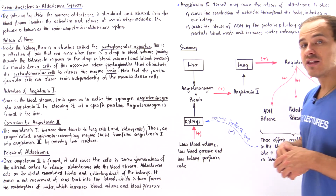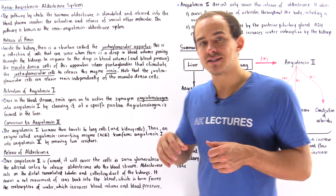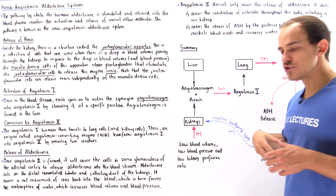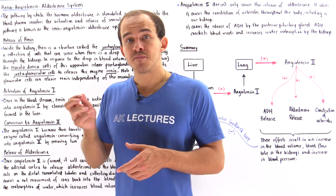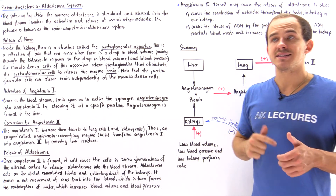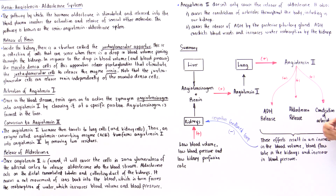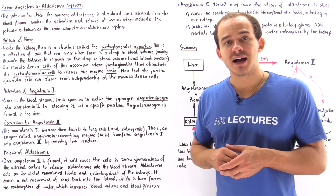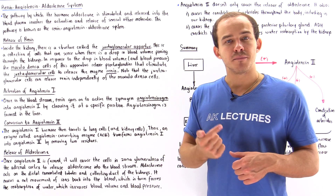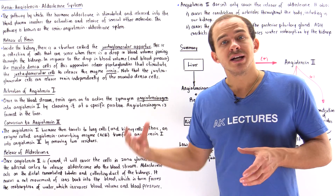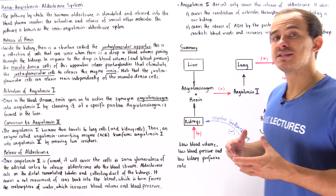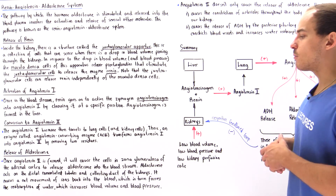Aldosterone causes our kidneys to become more permeable to certain ions. The rate at which sodium and chloride are reabsorbed into the plasma increases, while we excrete more potassium and hydrogen ions. This creates a net movement of ions back into the blood, forcing more water to be reabsorbed, increasing blood volume and blood pressure.